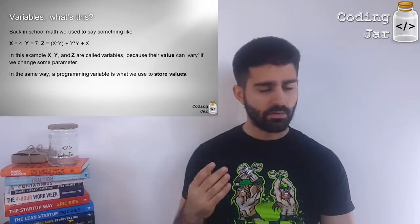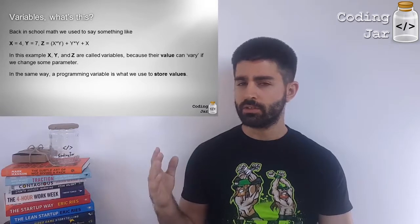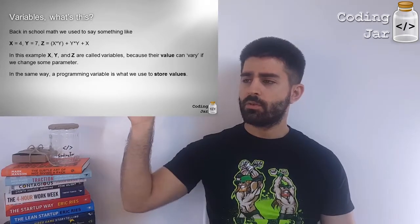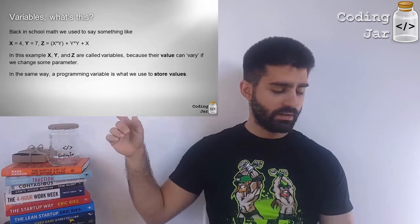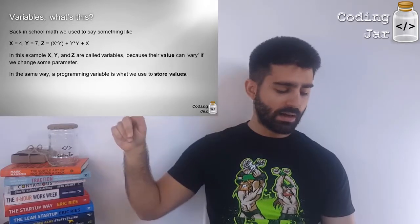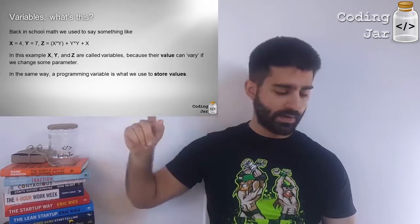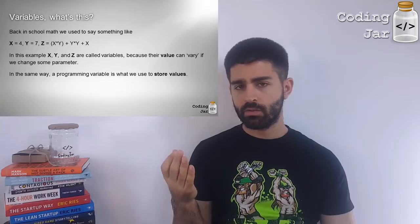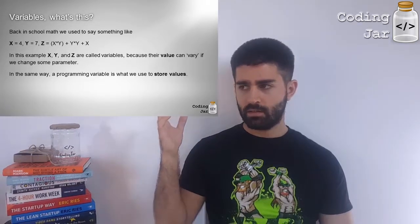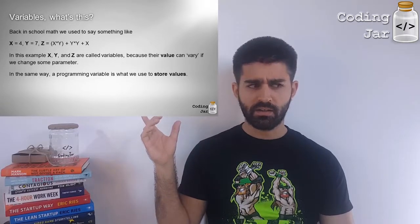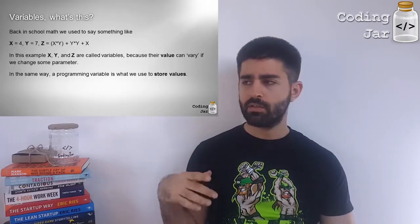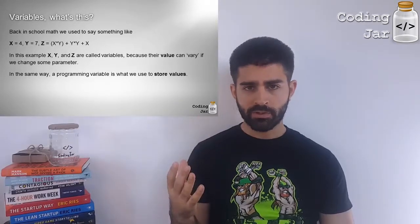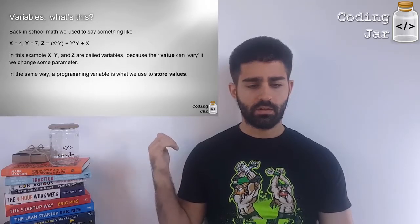So, variables, what is it? Do you remember back in high school or in school in general, or if you're still in school, do you remember from your school curriculum that in math we had x equals to something, y equals something else, and then z equals to x times y plus y on the second power plus x. Those x, y and z are called variables because their value can vary. And for instance z's value can vary because if x changes or if y changes then its value changes.